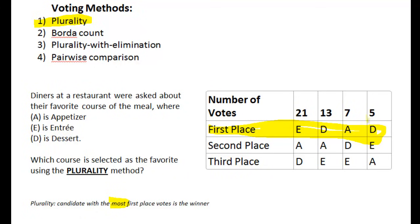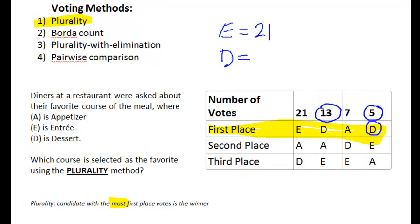We don't care about the second place, we don't care about the third place — we're only looking at that top row for first place. You can see that entrees had a total of 21 first place votes. Desserts — it's not just this 13 — desserts also has this 5 right here, D showed up twice. So we add those two up: desserts has a total of 18 first place votes, and appetizers only came in with 7 first place votes.